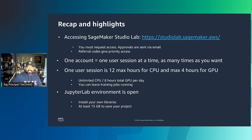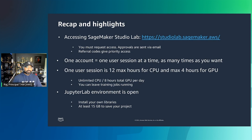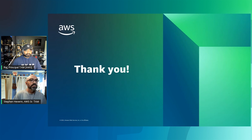Let's recap before we wrap up. You have the SageMaker Studio Lab link and referral codes for priority access — please complete the account request in the next few minutes, as the referral code expires at 3 p.m. Eastern today. One account means one user session at a time: 12 hours max per session for CPU and 4 hours for GPU. You get unlimited CPU sessions and 8 hours total GPU per day. The JupyterLabs environment is open — you can install your own libraries and get at least 15 GB to save your projects.